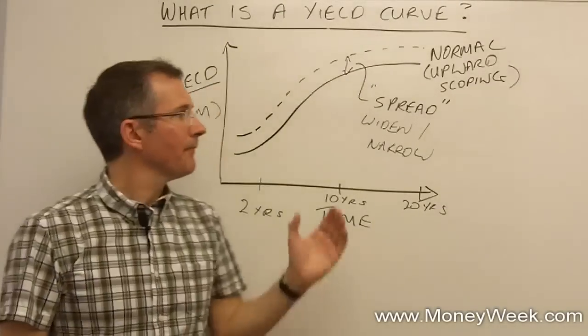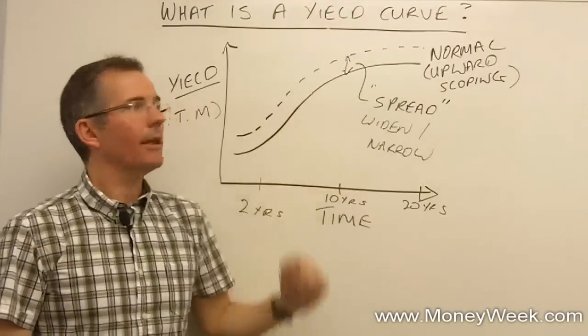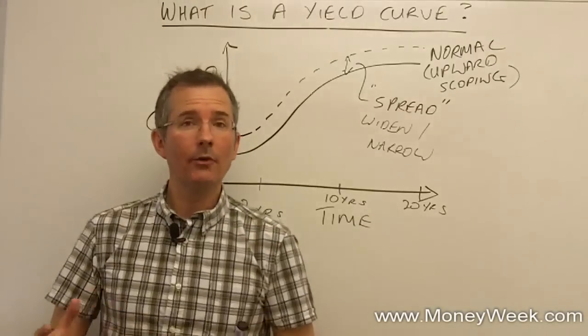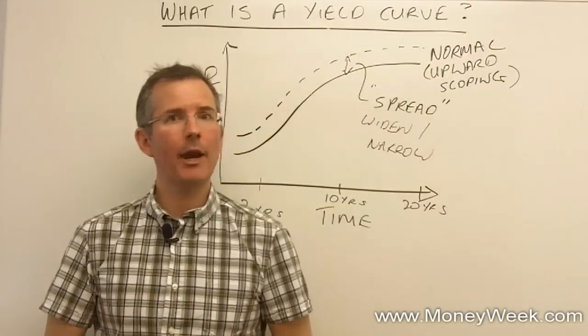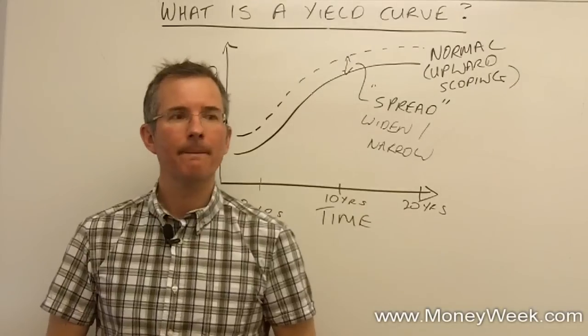In the US, the benchmark, if you like, is a treasury. It's the equivalent to a gilt in the UK. So, you hear American bonds being talked about in terms of the spread over treasuries.